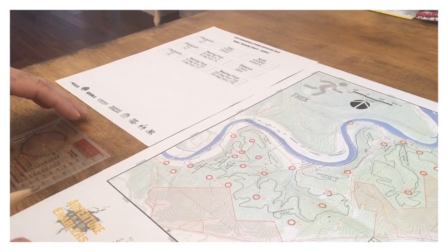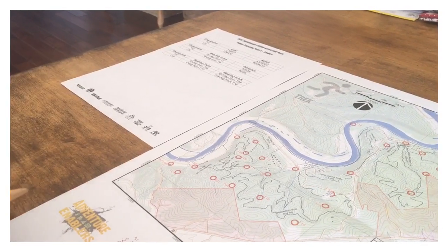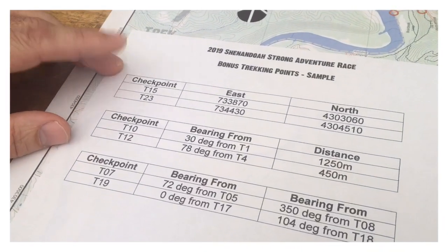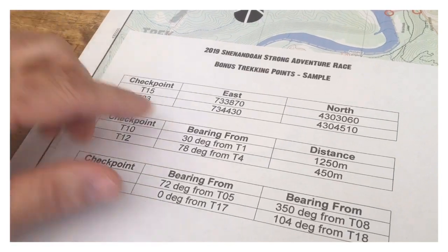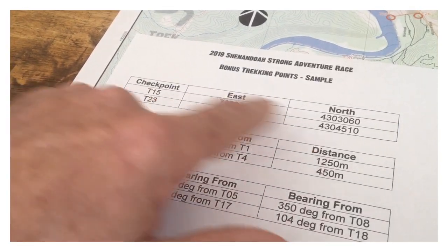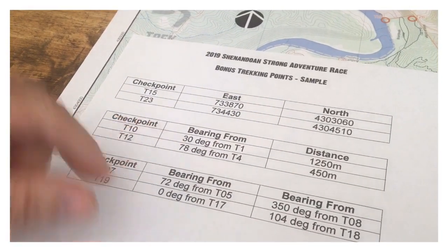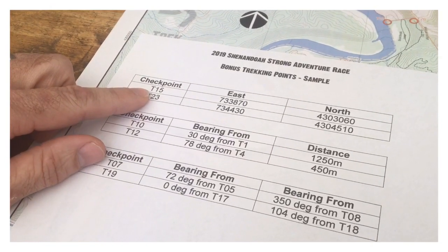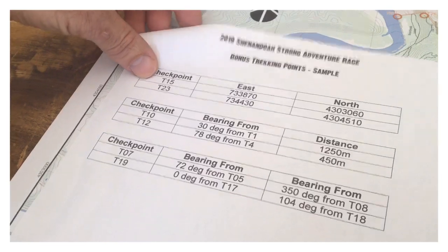I'm going to start off by showing you how to do a UTM plot. This is a sample of the sheet that you're going to get. You can see the top one is going to be by bearing with two different UTM coordinates here, an Easting and a Northing. Let's go ahead and plot checkpoint T15.